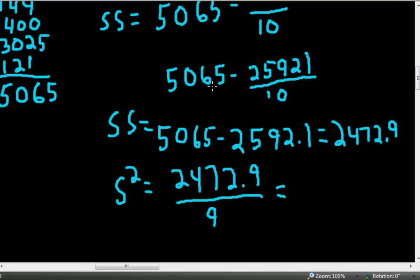Now we have our variance, which is 274.7666. We'll round to the fourth decimal place here.